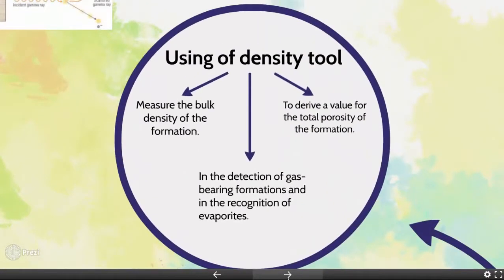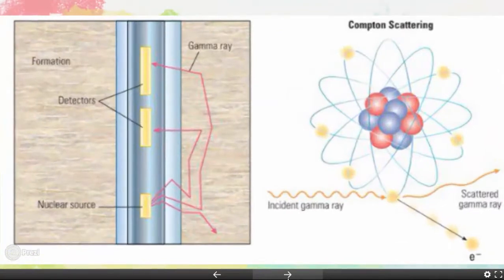Moving forward, the main use of the density tool is to derive a value for the total porosity of the formation. It is also useful in the detection of gas-bearing formations and in the recognition of evaporites. The gamma rays enter the formation and undergo Compton scattering by interaction with the electrons in the atoms composing the formation, which reduces the energy of the gamma rays in a stepwise manner and scatters them in all directions.